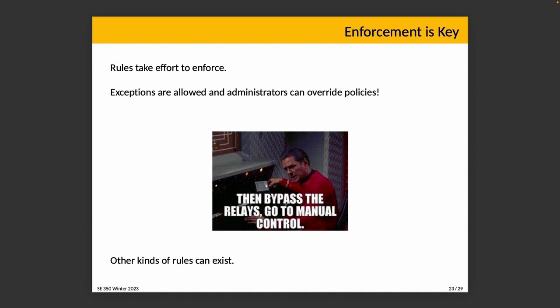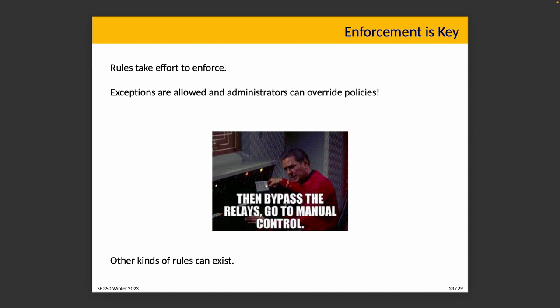Other kinds of rules may exist beyond the examples we've talked about. Limiting access to data based on rules is pretty common and obvious. We could also have rules that terminate processes if they use too much CPU time or too much memory — but those are fairly rare in the real world. There are probably no good reasons for users to read one another's data without explicitly granted permission, but there are frequently good reasons for using a lot of resources.